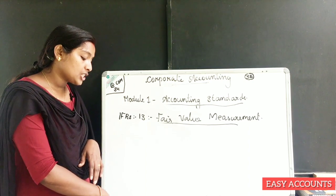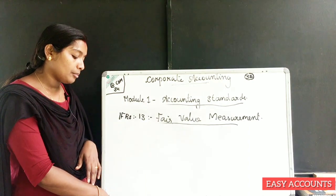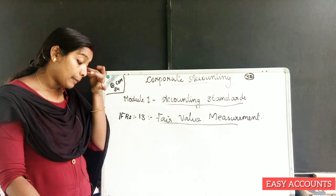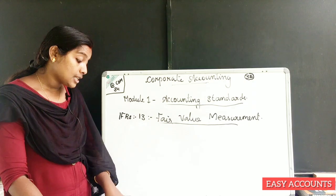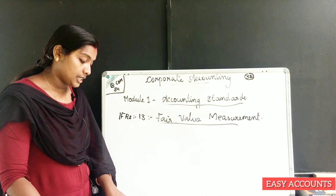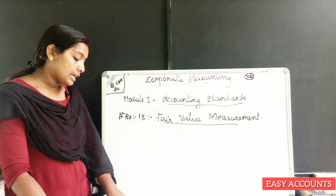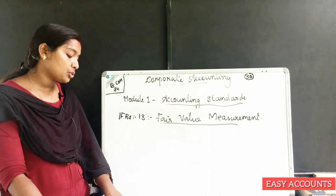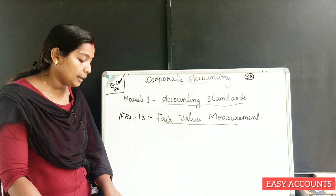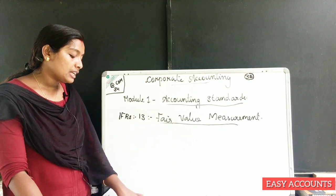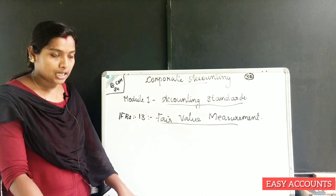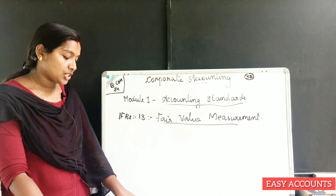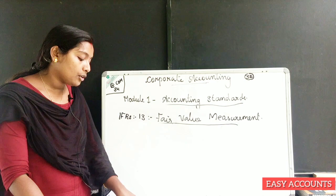IFRS 13 does not specify the measurement and disclosure requirements for share-based payment transactions, leases, or impairment of assets. Nor does it establish disclosure requirements for fair value related to employee benefits and retirement plans. If you apply IFRS 13, we have to address share-based payment transactions, leases, or impairment of assets.